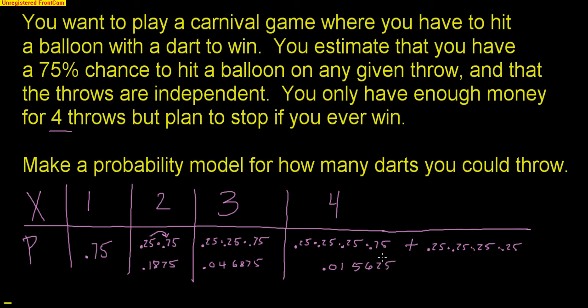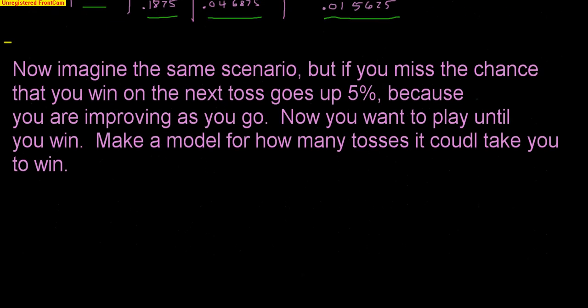One way to check that you're correct is if you add all the final probabilities together — 0.75, 0.1875, 0.046875, and 0.015625 — you will get one. So that is a very good probability model question that makes you think a little bit.